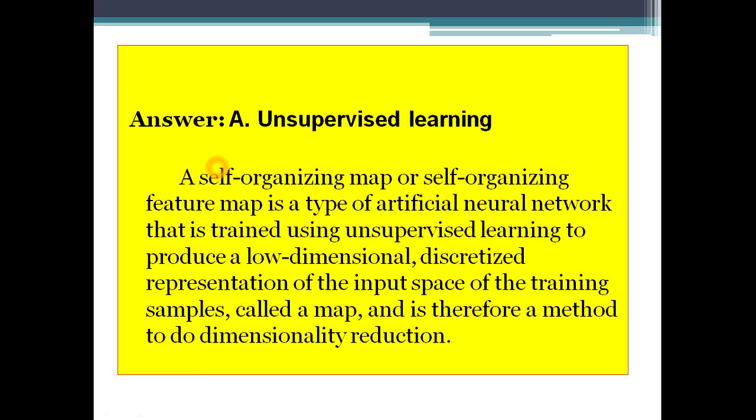A self-organizing map is a type of artificial neural network trained using unsupervised learning to produce a low-dimensional discretized representation of the input space — called a map — and is therefore a method for dimensionality reduction. You try to create a map from high dimensions to low dimensions using unsupervised learning-based training. SOM is often compared with the K-Means clustering algorithm — comment which is more efficient!